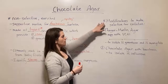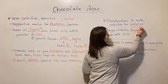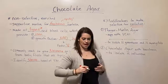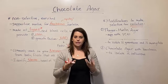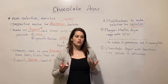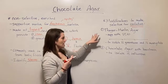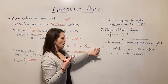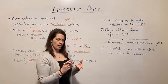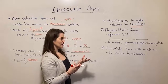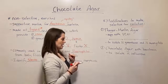We can also modify chocolate agar to make it selective for the purposes of isolation. This is useful when you're drawing a sample from a site in the body that is not typically sterile — such as the mouth or the nose. Modified types of chocolate agar can prevent the growth of most other bacteria, allowing for isolation of specific species of Neisseria and Haemophilus.